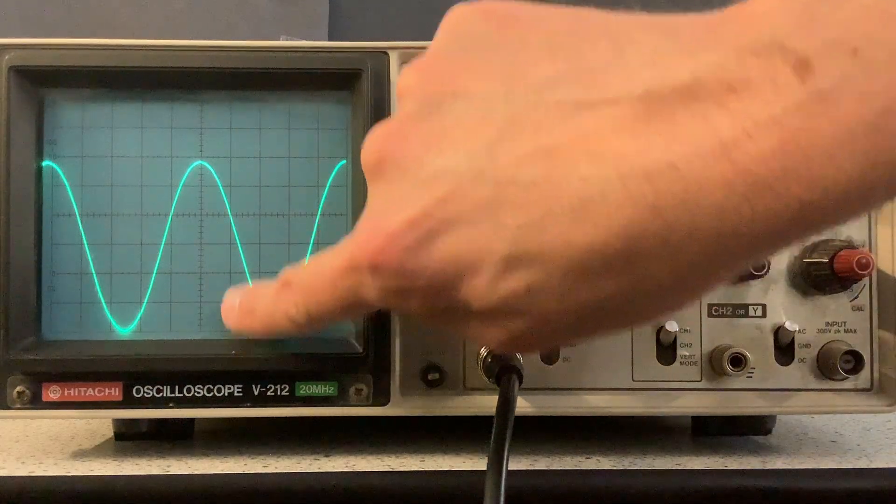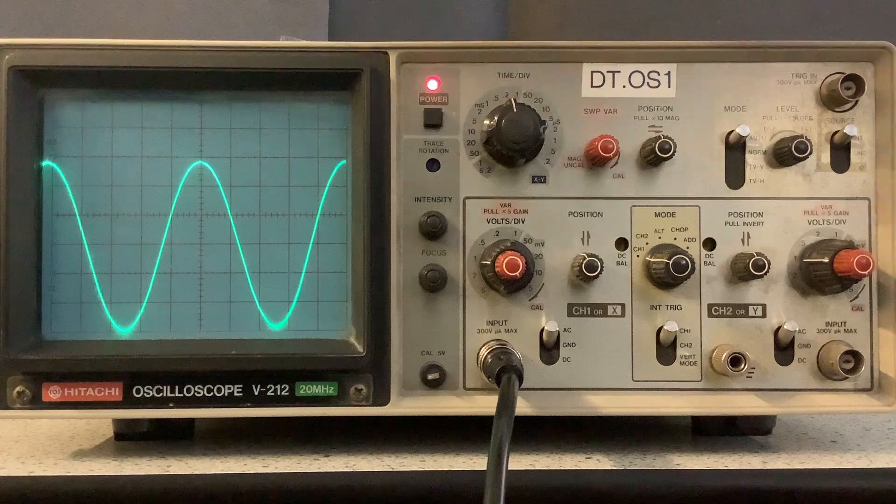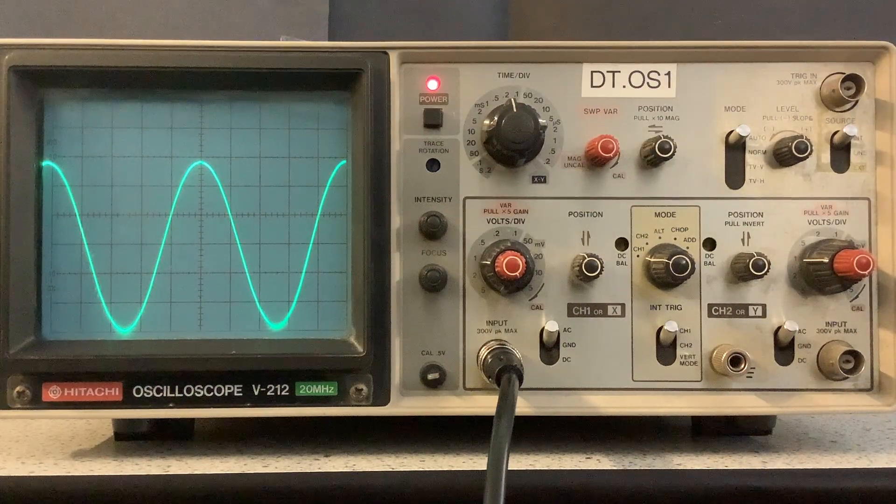Once I have read that off I will need to use the volts per division to work out the peak to peak voltage and then I will need to halve that to get the amplitude.